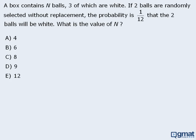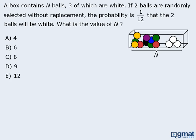Let's begin by summarizing the given information. First, we are told that the box contains n balls, three of which are white. And we are told that if two balls are randomly selected, the probability that both balls are white is equal to one twelfth.